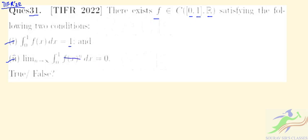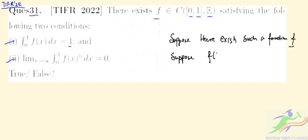We have to determine whether this is true or false. First, suppose there exists such a function f, and suppose that f(t) is greater than 0 for any t in the closed interval [0,1].